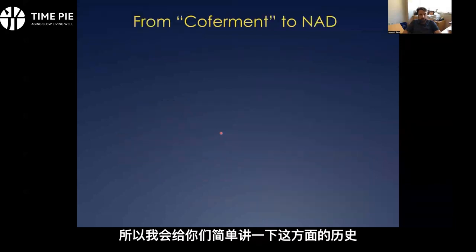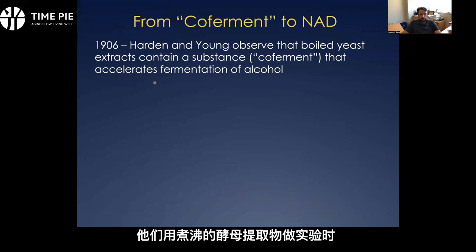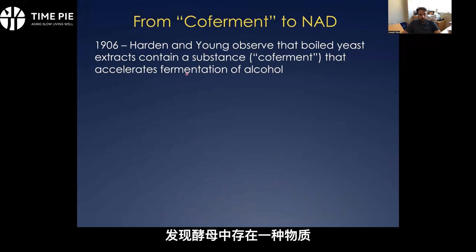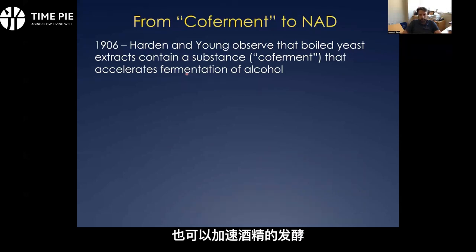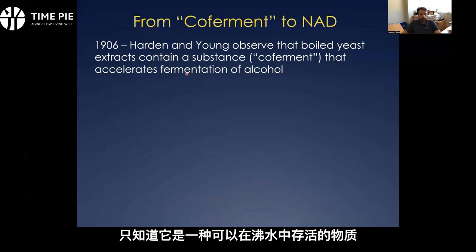The discovery that pellagra is caused by an NAD deficiency is integrally related to the discovery of NAD itself. Starting with the discovery of coferment by Hardin and Young in 1906 — they were doing experiments with boiled yeast extracts and discovered that a substance present in the yeast, even after boiling, could accelerate the fermentation of alcohol. They named it coferment, not really knowing anything else about it at the time, other than that it could survive boiling.